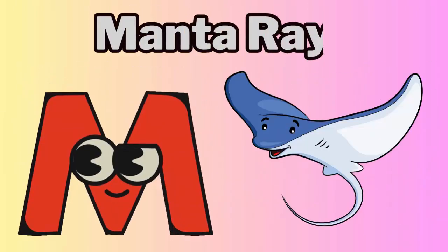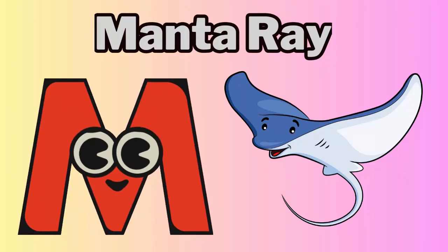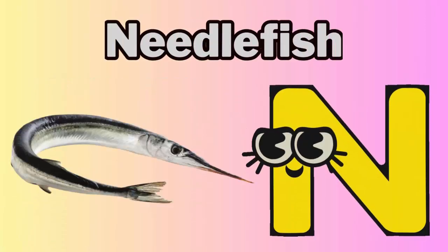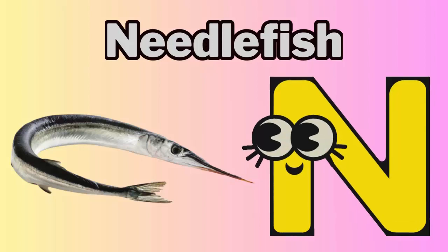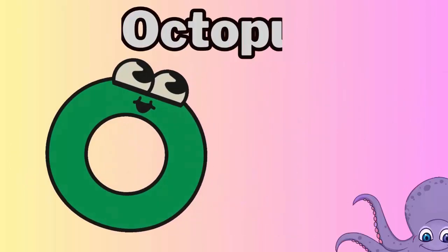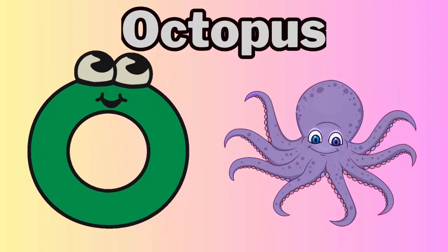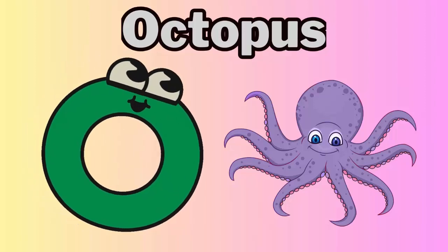M is for manta ray — manta ray. N is for needlefish — needlefish. O is for octopus — octopus.